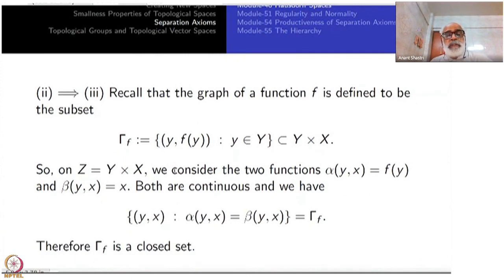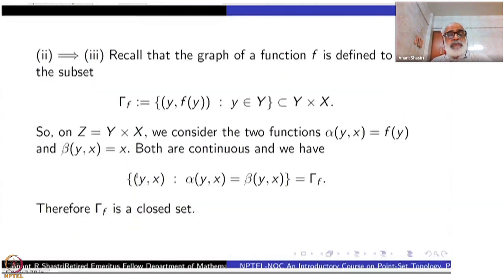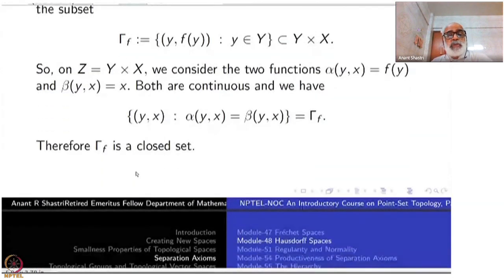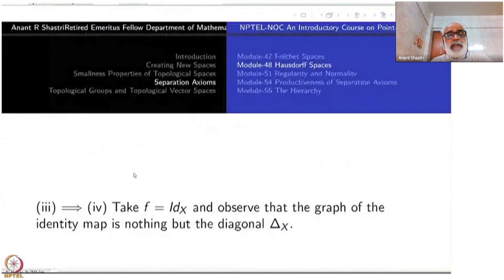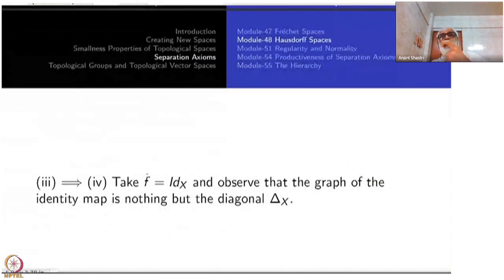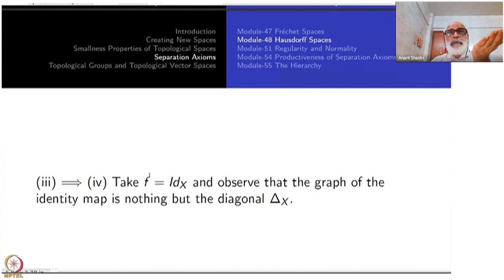Third implies fourth: the diagonal delta X is nothing but the graph of the identity map — the set of (x, x). Apply condition three to the case Y equals X and F is the identity map, so the diagonal is closed.